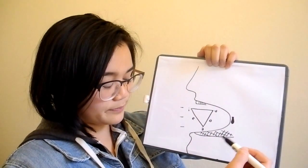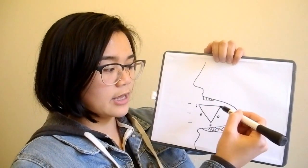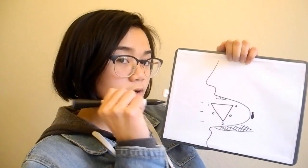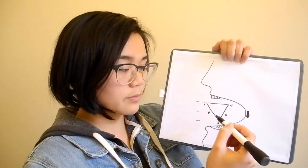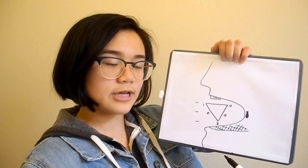At the same time, your tongue is in the highest position pronouncing I and U, in the middle as it goes lower pronouncing E and O, and the lowest when you pronounce A.